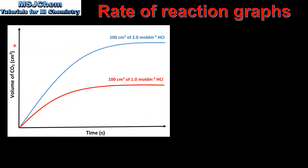In the first graph we have volume of carbon dioxide produced on the y-axis against time on the x-axis. We have two curves: the blue curve is produced by reacting 100 cm³ of 2 mol per dm³ HCl with excess calcium carbonate, and the red curve is produced by reacting 100 cm³ of 1 mol per dm³ HCl with excess calcium carbonate.